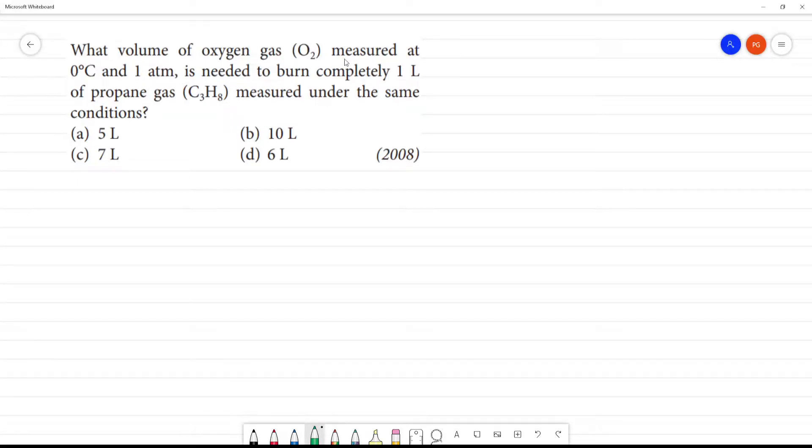What volume of oxygen gas measured at 0 degrees Celsius and 1 atmospheric pressure is needed to burn completely 1 liter of propane gas? So propane is C3H8: CH3-CH2-CH3. This is propane.